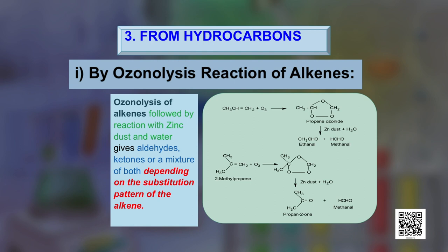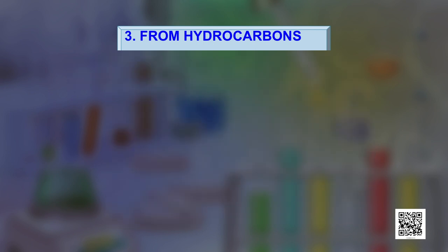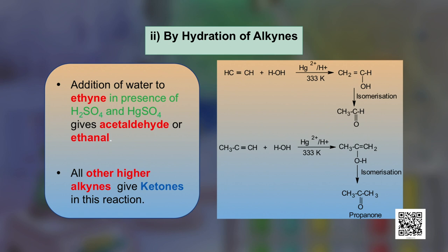For example, starting with propene, ozonolysis gives methanal and ethanal as products. Starting with 2-methylpropene, the products are methanal and propan-2-one — that is, one aldehyde and one ketone. So the product depends upon the starting alkene. The next method is hydration of alkynes: addition of water to ethyne in the presence of sulfuric acid and mercury sulfate gives acetaldehyde (ethanal), while all other higher alkynes give ketones in this reaction.